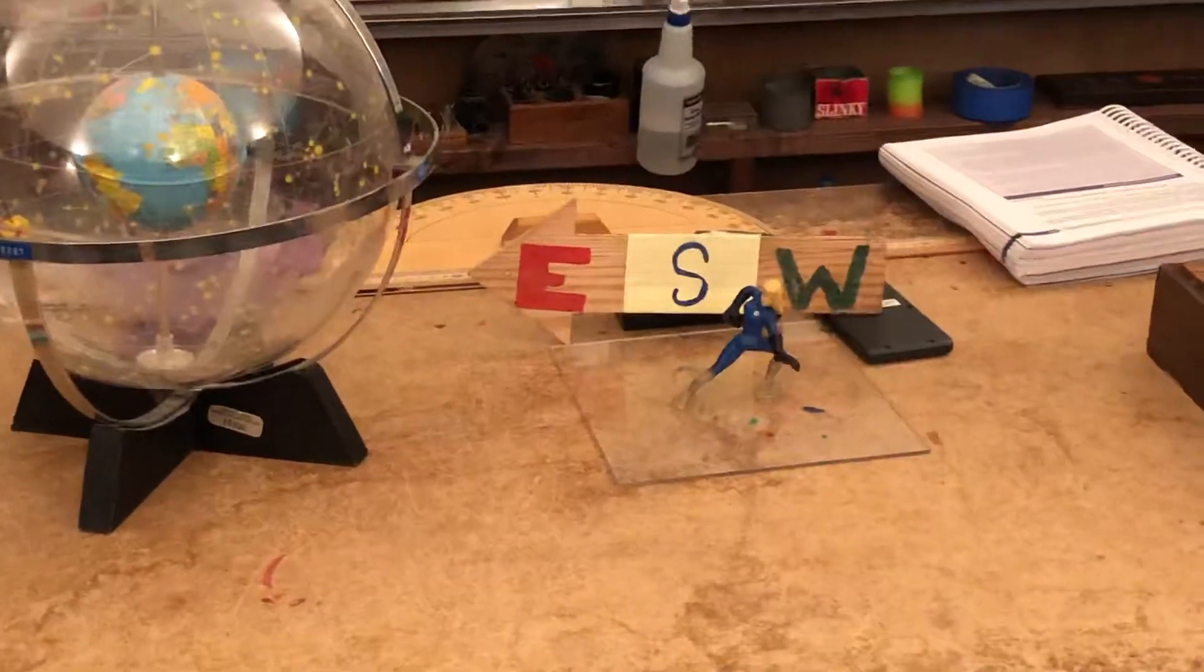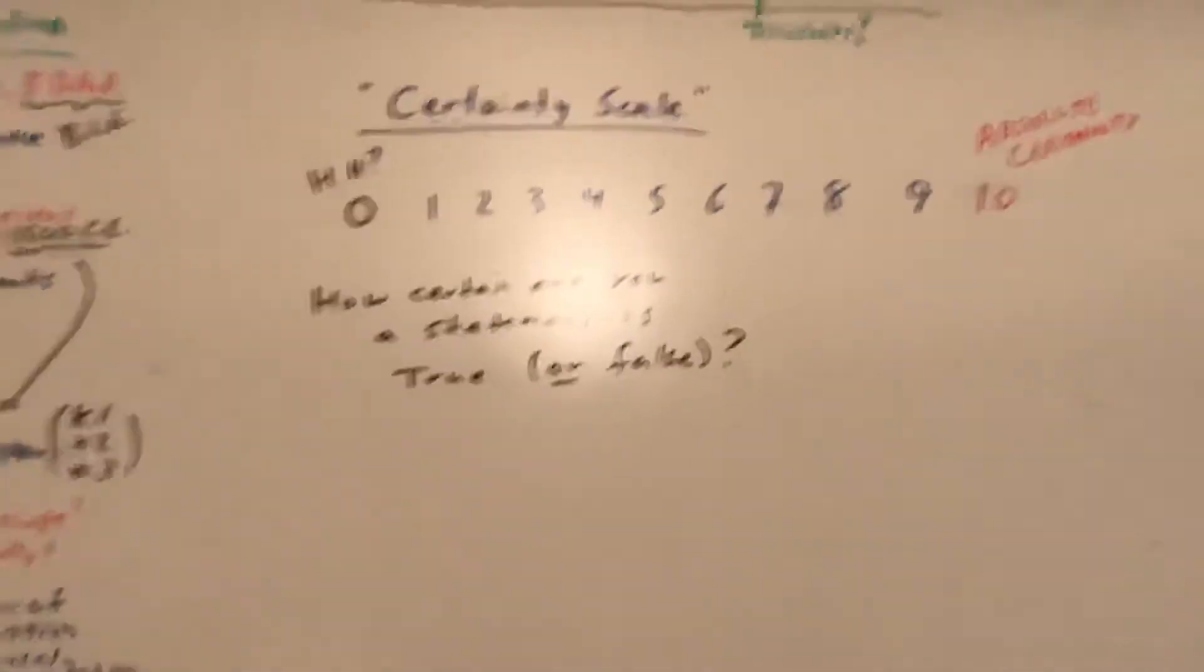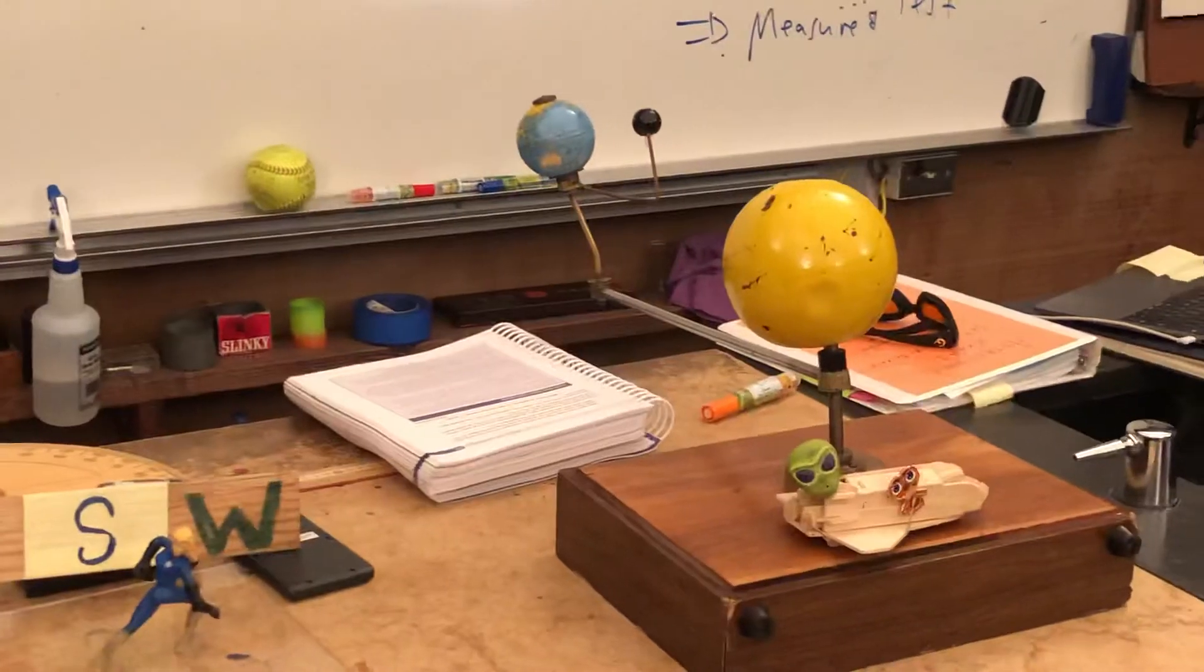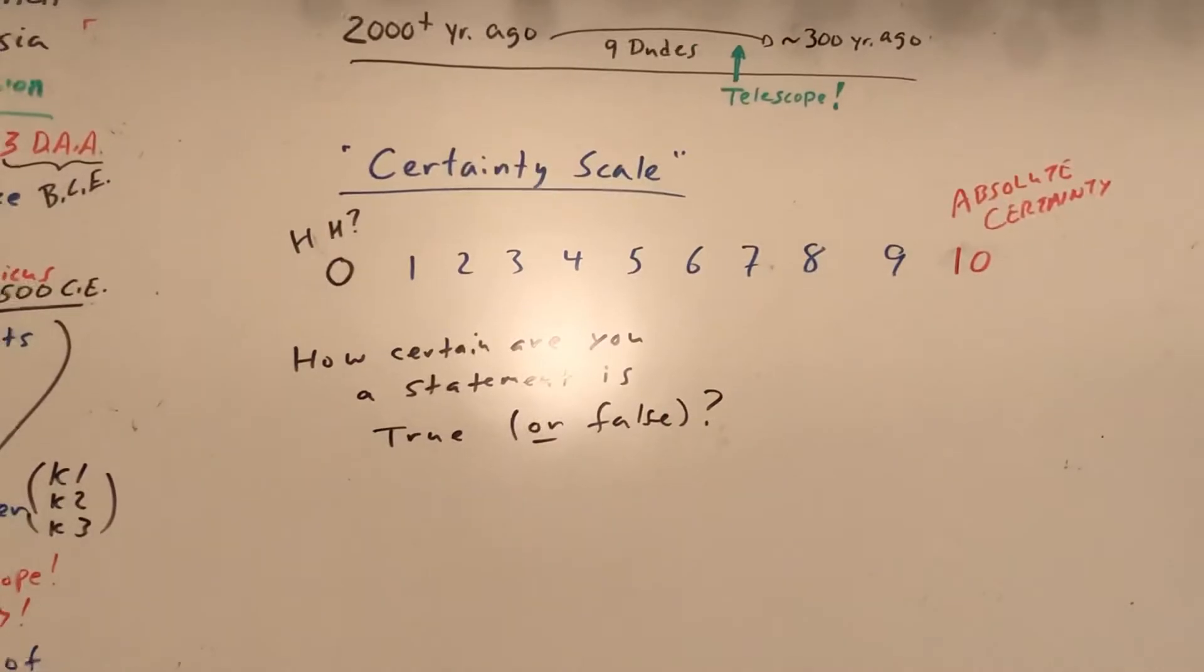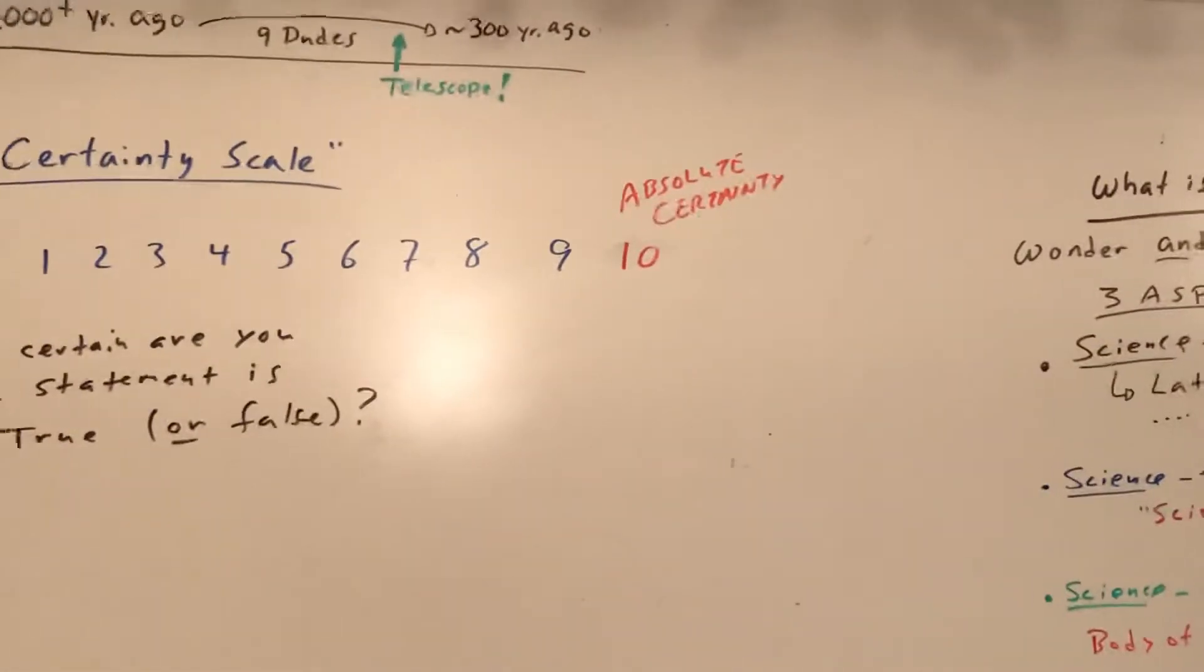We know what we see, we see what we see. Aristotle said it's geocentric. Aristarchus said it's heliocentric. Are we happy with just guessing, or do we want to know?